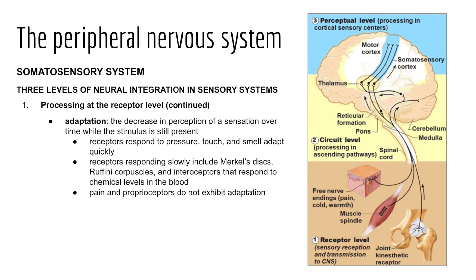Before moving to the circuit level, I want to introduce adaptation — a characteristic of most sensory receptors whereby there is a decrease in the perception of a sensation over time, even while a stimulus is still present. Quick adapters detect pressure, touch, and smell but messages die out quickly. Slow adapters continue to trigger nerve impulses as long as the stimulus persists. Some receptors, like pain receptors and proprioceptors, don't exhibit adaptation at all, as we should never adapt to pain.